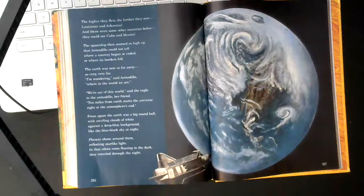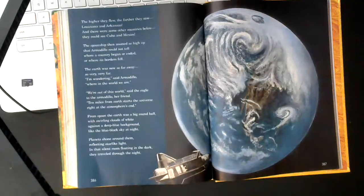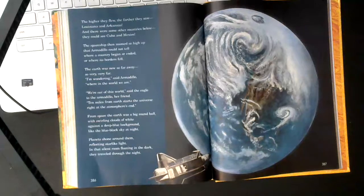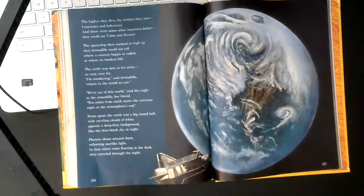From space the earth was a big round ball, with swirling clouds of white, against a deep blue background, like the blue-black sky at night. Planets shone around them, reflecting star-like light, and that silent room, floating in the dark, they traveled on through the night.